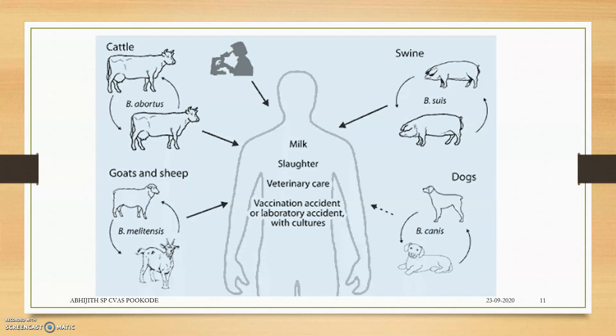Cattle can transmit the bacteria to other cattle by direct transmission, as can goats, sheep, pigs, and dogs. Whenever humans consume milk from infected cattle, conduct slaughter without proper care, or perform veterinary procedures without proper protective equipment, they can contract brucellosis.